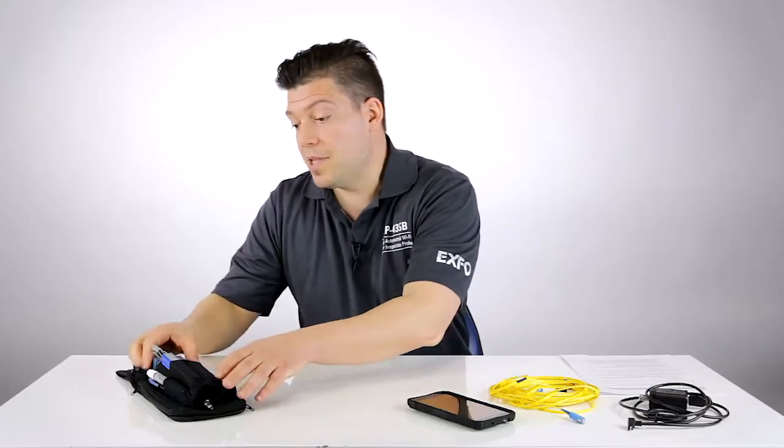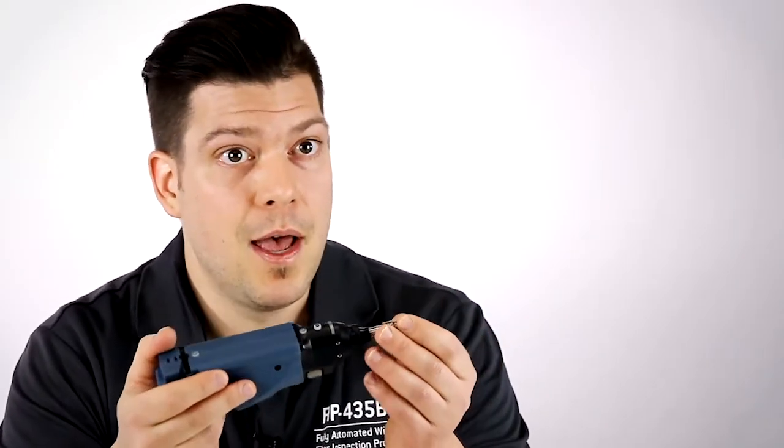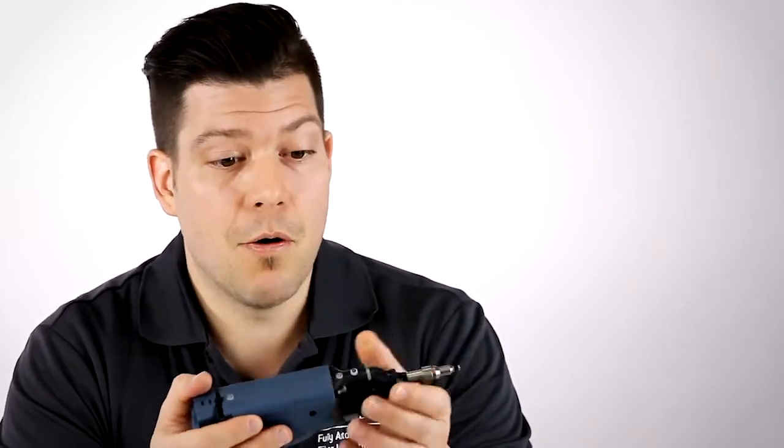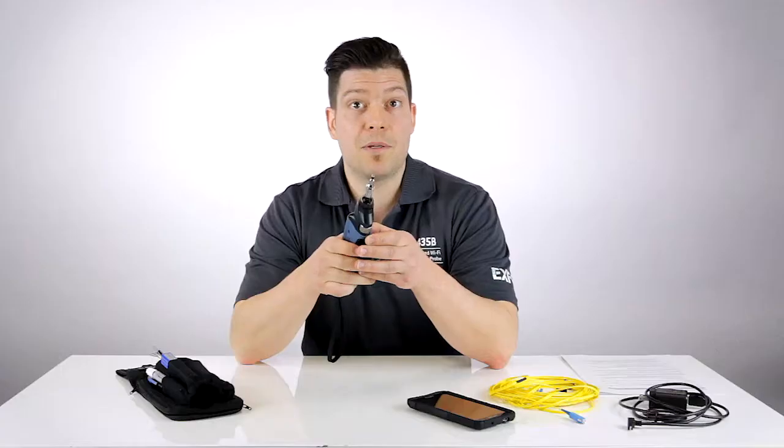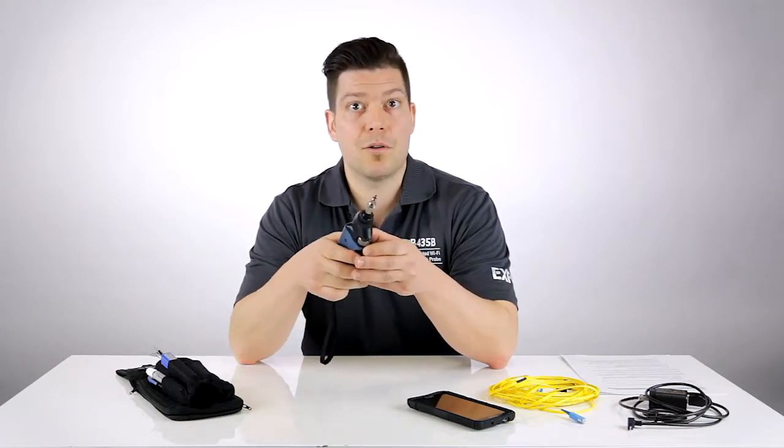An inspection probe is basically a tool that is used to look at the end face of a connector and assess if it's free of any defects, damages, or contaminations. So every time you touch a fiber, whatever the application you're working on, fiber inspection should be the very first step to complete before touching anything.